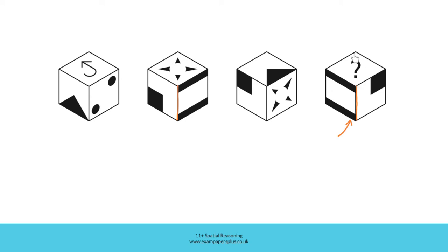Therefore, if we can establish which figure is directly opposite this one, we can say what the missing figure must be. To help us do that, we can work out which four faces are adjacent to this one. Of course, those same four faces will all be adjacent to the missing figure too, because the four faces will be around the outsides of the cube. We know that these are two of the faces — here and here — and another face must be this one.